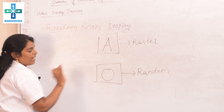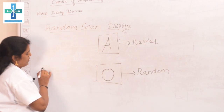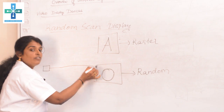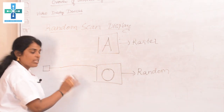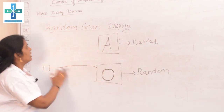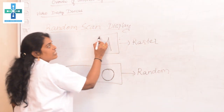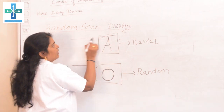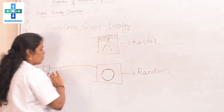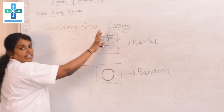In random scan display, the electron beam falls exactly on the position of the image itself. Only on the exact position of the image will the light be placed, and then we get the full picture. That is the advantage of random scan display. In raster scan display, the light from the beam traverses row by row, each row in sequence. But in random scan display, the light falls exactly on the picture. That is the main advantage.